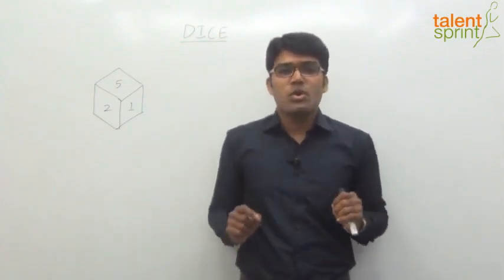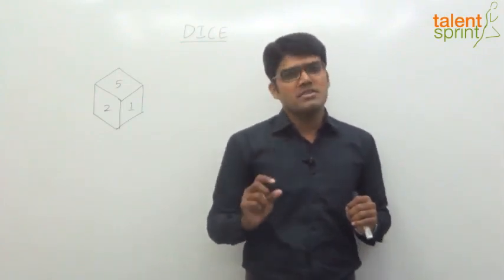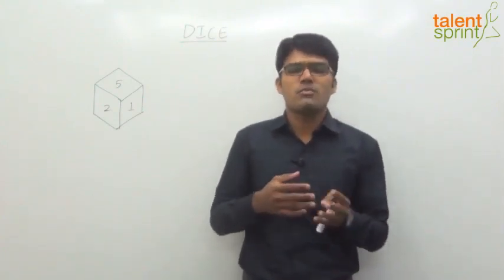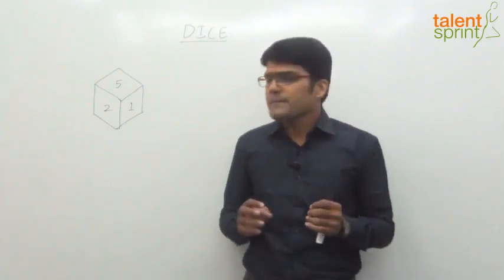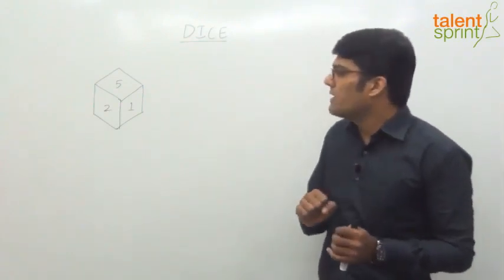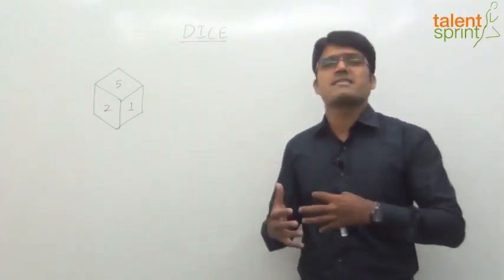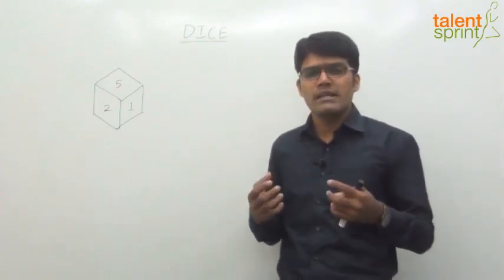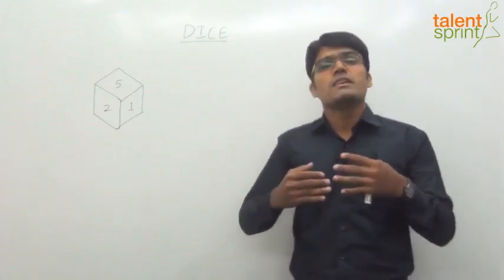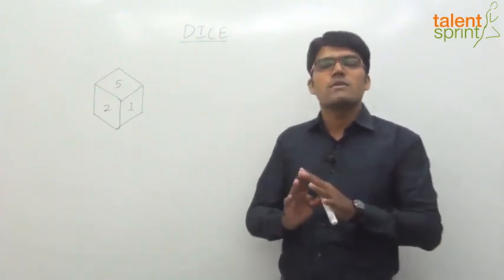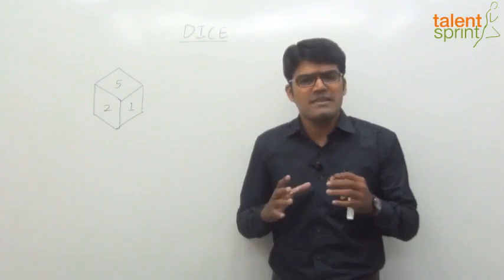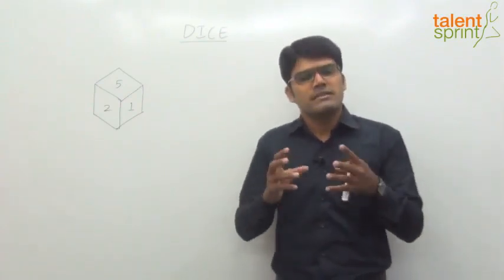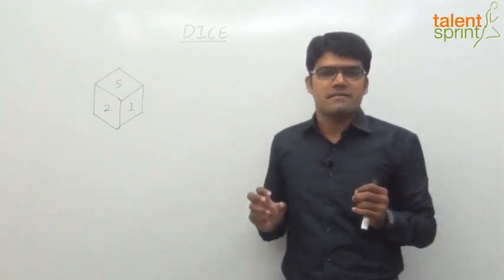So what is a dice? As you all know, it is a 3-dimensional figure, like a cube or a cuboid. This is one representation of a dice which has got 6 surfaces, 12 edges, and 8 corners. But here we will not be worried about those edges and corners — our focus will only be on the 6 surfaces. So basically a dice is a 6-surfaced 3D object.